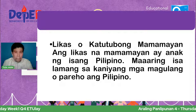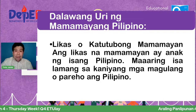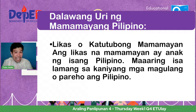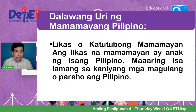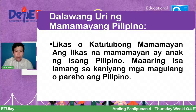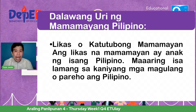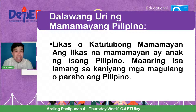Meron tayong dalawang uri ng mamamayang Pilipino. Una ay tinatawag nating likas o katutubong mamamayan. Ang likas na mamamayan ay anak ng isang Pilipino — talagang anak ng isang Pilipino. Halimbawa, ang aking ina at ang aking ama ay kapwa Pilipino, kaya matatawag tayo na likas o katutubong mamamayan.